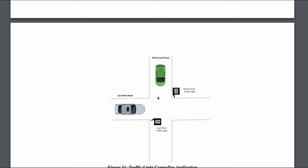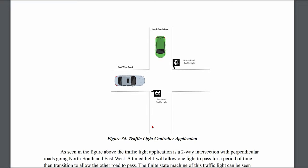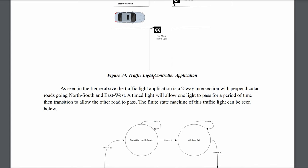The same thing applies the other way — if our east-west traffic light is green, then the north-south one has to be red so they don't crash into each other. We'll go from green to yellow to red, then green on the other side so that car can pass. As seen in the figure, the traffic light application is a two-way intersection with perpendicular roads going north-south and east-west. A timed light will allow one road to pass for a period of time, then transition to allow the other road to pass. The finite state machine for this traffic light is shown below.